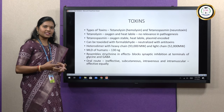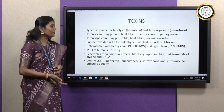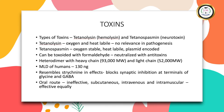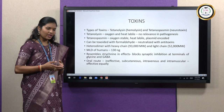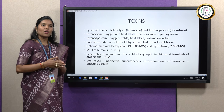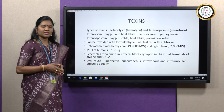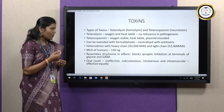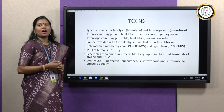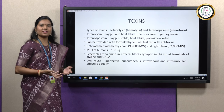Strychnine causes spasticity and muscle cramps when injected into human hosts. Similarly, tetanospasmin blocks synaptic inhibition in the spinal cord, especially at junctions where GABA and glycine are used as neurotransmitters. GABA is gamma amino butyric acid. As it blocks synaptic inhibition, uncontrolled spread of impulses gets initiated anywhere in the central nervous system.